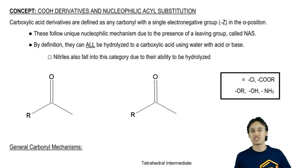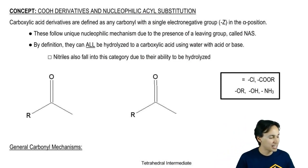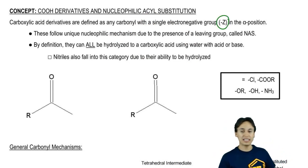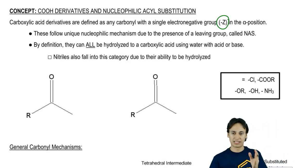Let's start off with the first question. What is a carboxylic acid derivative? It's simply defined as any carbonyl that has an electronegative Z group in the alpha position. That's kind of a lot to chew on. Let's break that down.